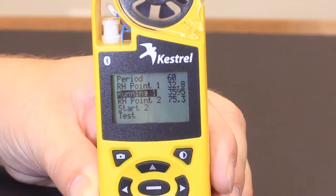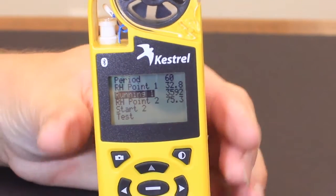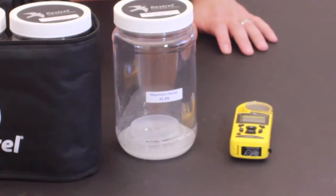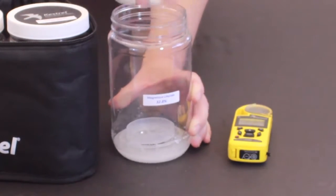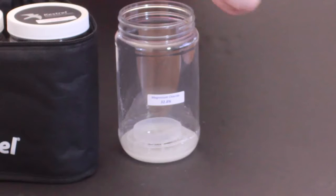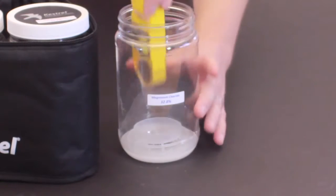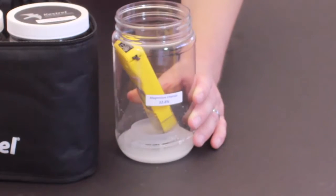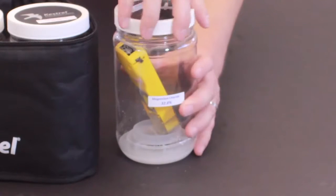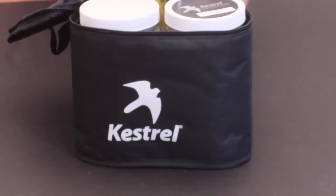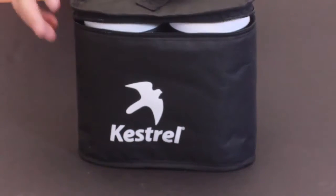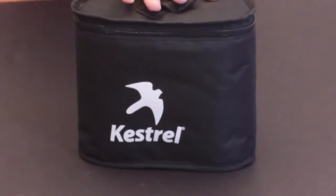So once the start one has started the countdown from 3600 seconds, let's open up the magnesium chloride chamber. We'd wrap it around here just to keep it out of the mixture. Close this lid tightly, and then we'll put it into our RH calibration kit. Zipper it up and leave it untouched for an hour.